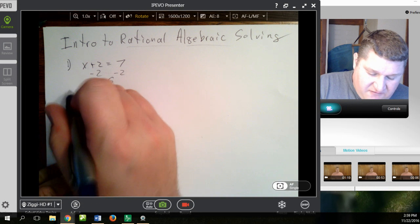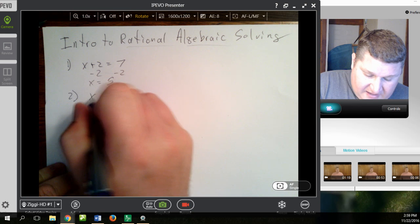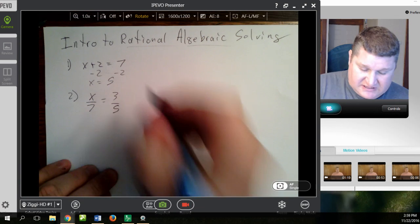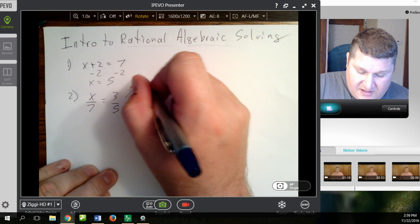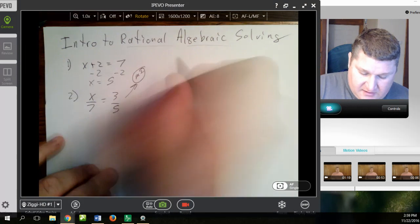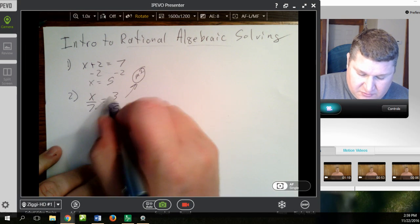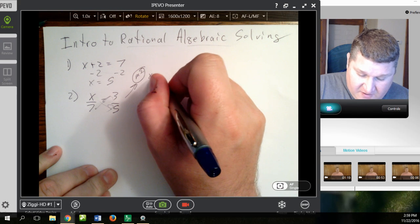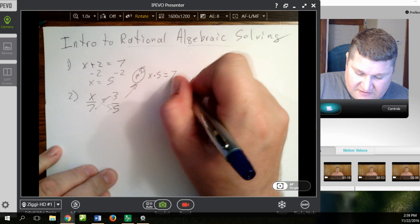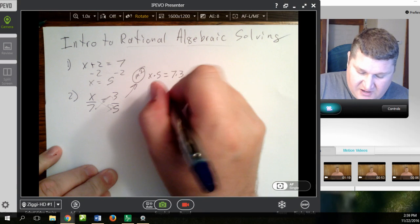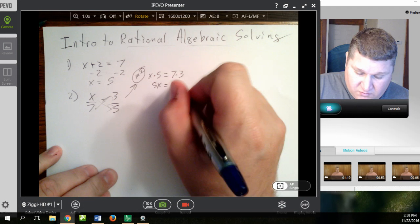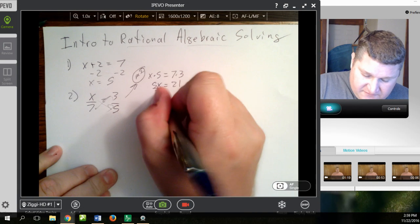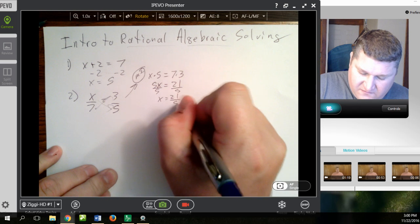Now, if I have, on the other hand, number 2, x over 7 equals 3 over 5. There's two ways I could go about doing this. Method 1 is simply to cross-multiply. And to cross-multiply, I'm going to take x times 5 equals 7 times 3, which is 5x equals 21. Not all bad. And then I divide both sides by 5, x equals 21 over 5.